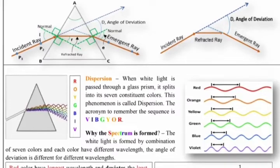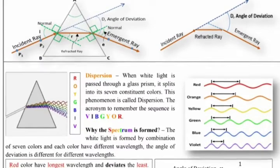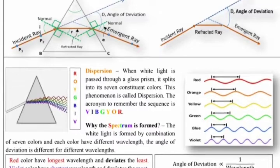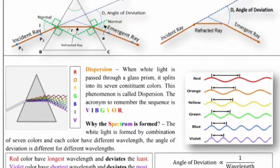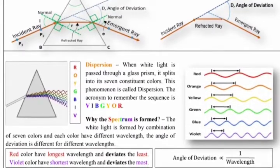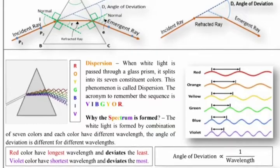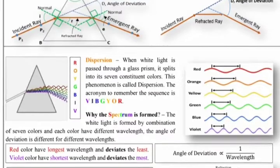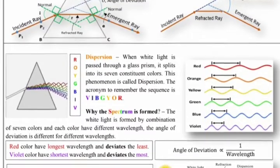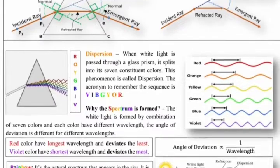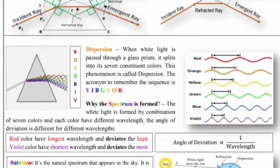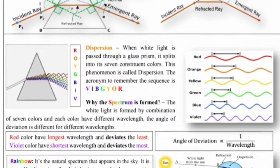Red color has the longest wavelength and deviates the least. Violet color has the shortest wavelength and deviates the most. The angle of deviation is directly proportional to one upon wavelength, so the deviation is different for different wavelengths, which is why white light separates into seven colors.